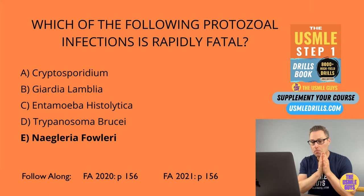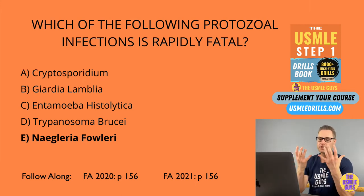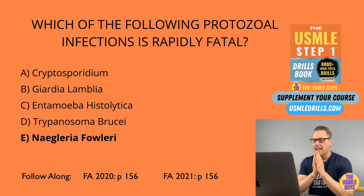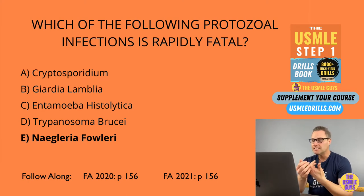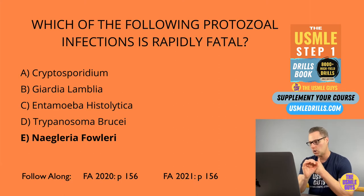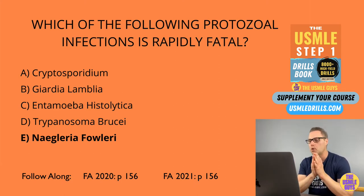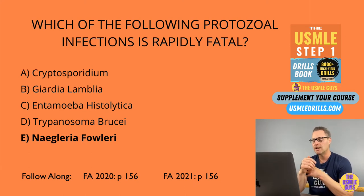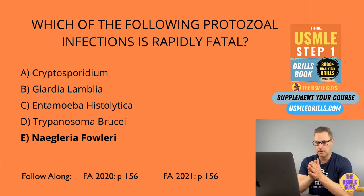The next one is Trypanosoma brucei — our final CNS-related protozoal infection. This is acquired by being bitten by the tsetse fly and leads to African sleeping sickness, characterized by somnolence, lymphadenopathy, recurring fever, and even coma. Diagnosis is made by identification of the trypomastigote in the blood smear. If it penetrates into the CNS, we treat with melarsoprol; if it doesn't, we treat with suramin.